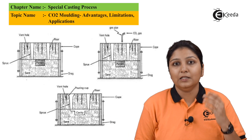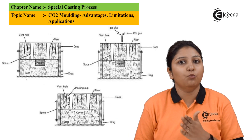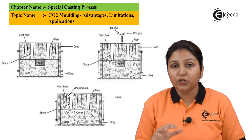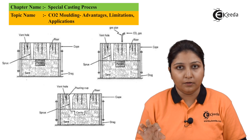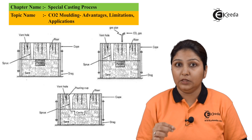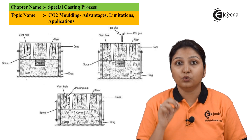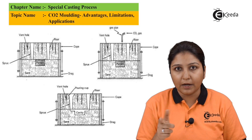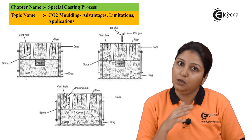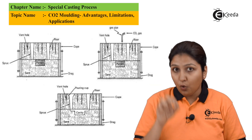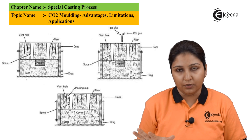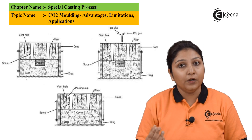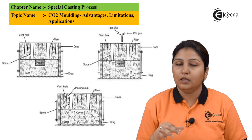In this diagram you can see there are three steps in which the molding is done. You use a cope and a drag in which sand is filled — sand along with a mixture of sodium silicate. Sodium silicate acts as a binder, it binds the sand properly. Proper ramming is done and a sprue is given. This is the whole arrangement done first in the drag, then in the cope.